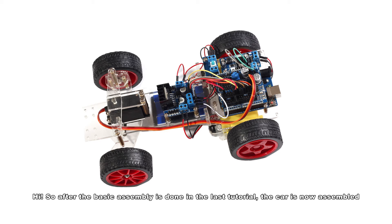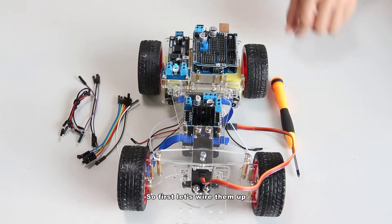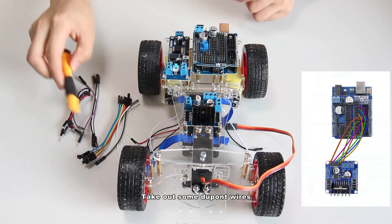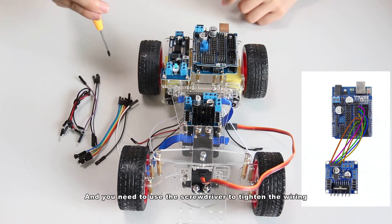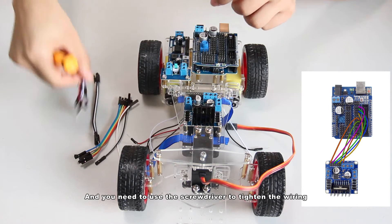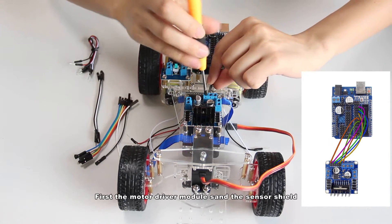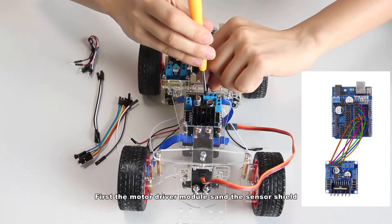Hi, so after the basic assembly is done in the last tutorial, the car is now assembled, but it still cannot work. We need to wire the modules and the boards as well as upload the sketch to the board. So first, let's wire them up. Take out some Dupont wires and you need to use the screwdriver to tighten the wiring. First, the motor driver module and the sensor shield.